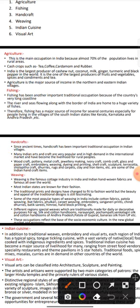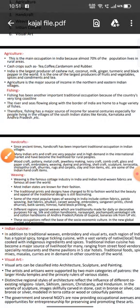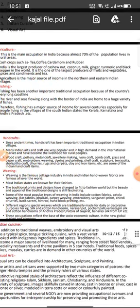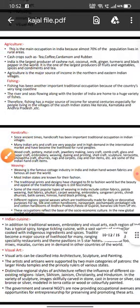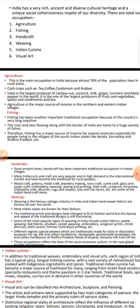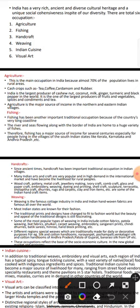Now we will discuss fishing. Fishing has been another important traditional occupation because the country has a long coastline. The rivers and seas flowing along the borders of India are home to a huge variety of fish. Fishing has been a major source of income for several centuries, especially for people living in villages of South Indian states like Kerala, Karnataka, Andhra Pradesh, etc.